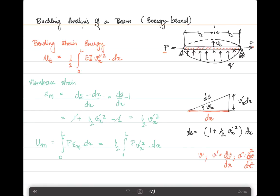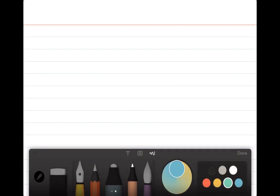We need to assume some kind of a relation or geometric description of the displacement that is occurring. If we assume the displacement v to be equal to a maximum displacement at the center v_c with the sinusoidal function sin(πx/L), then by substituting this into u_b and u_m, we will get π⁴EI/(4L³)v_c² for bending strain energy and π²P/(4L)v_c² for membrane strain energy.